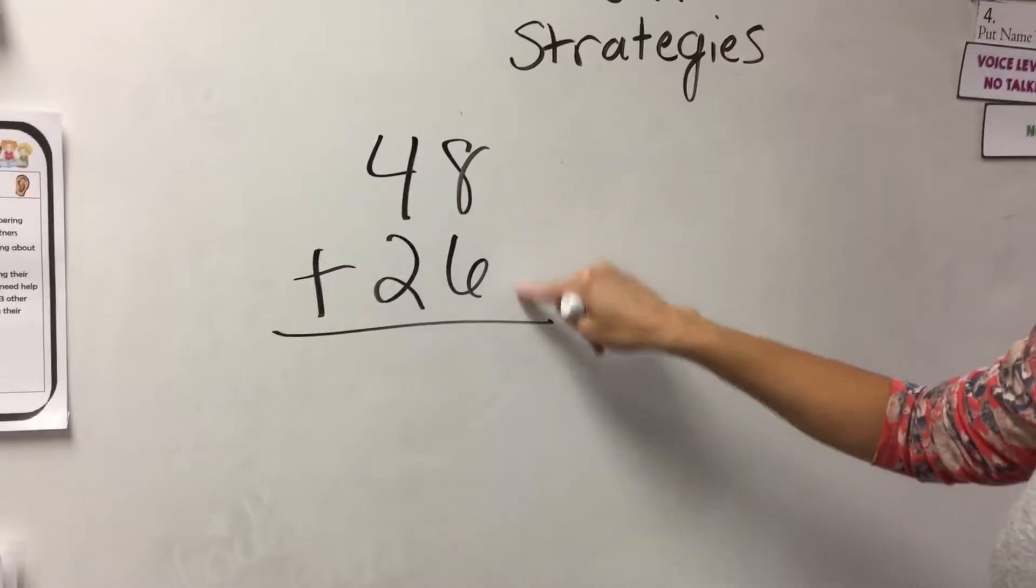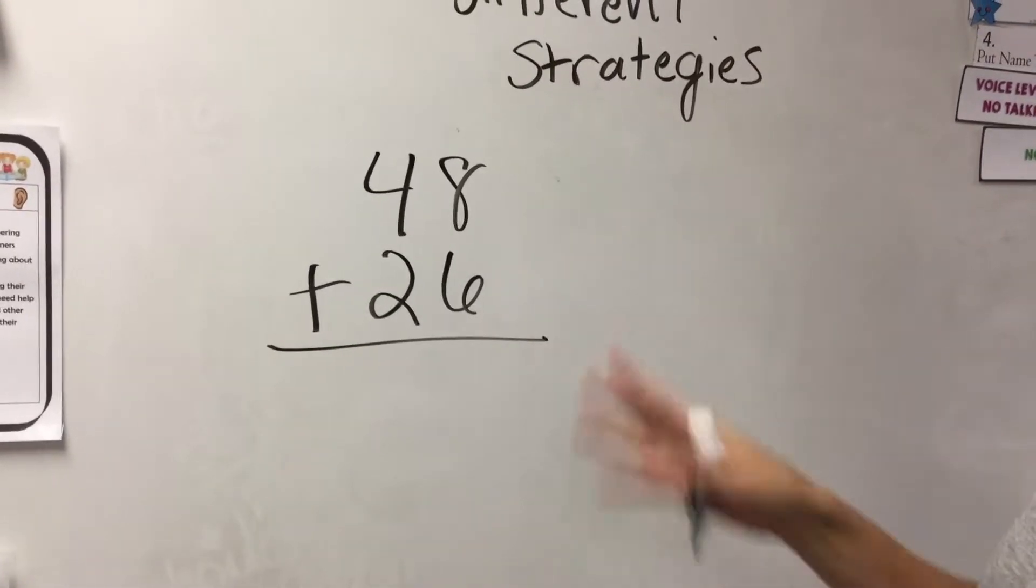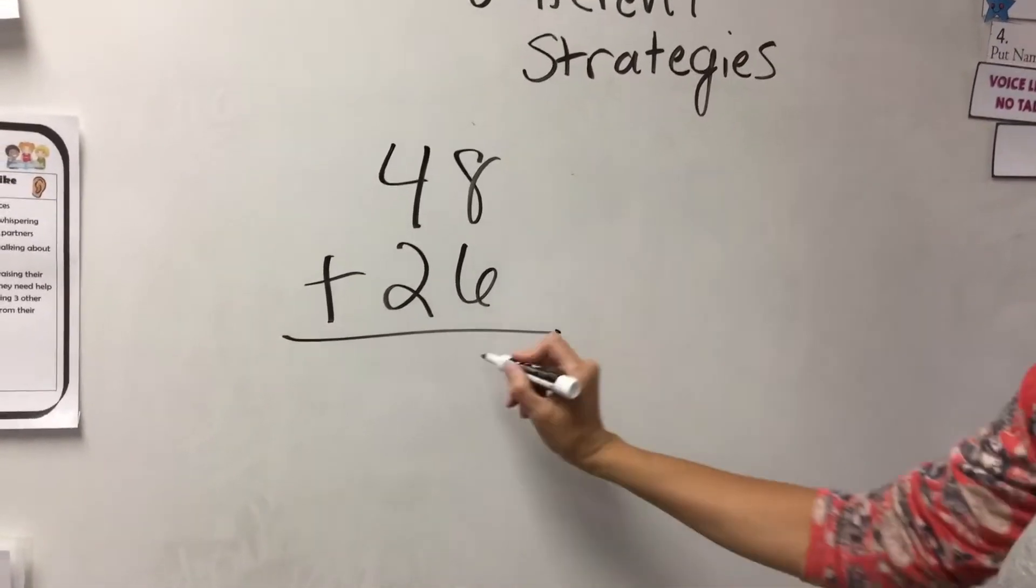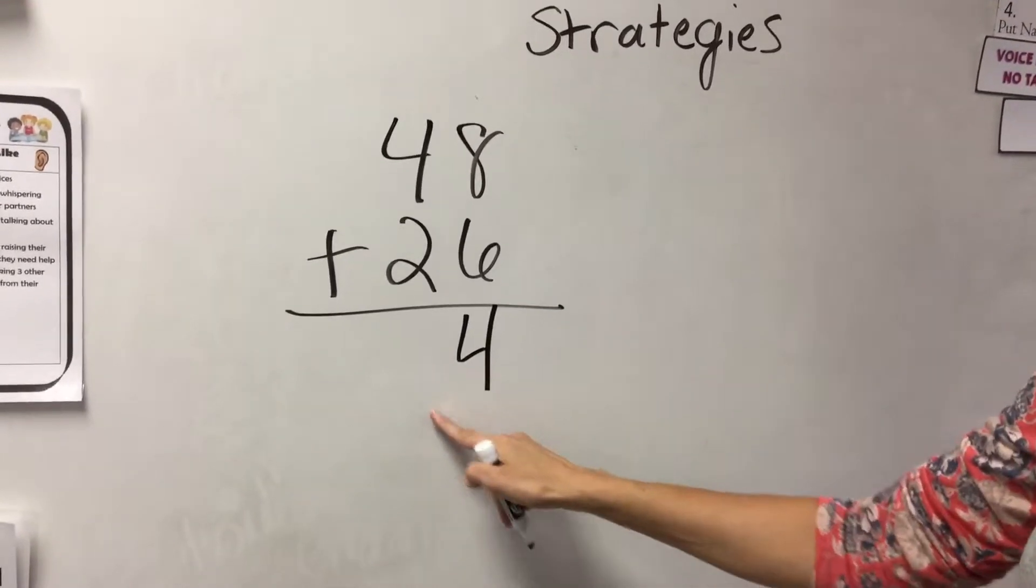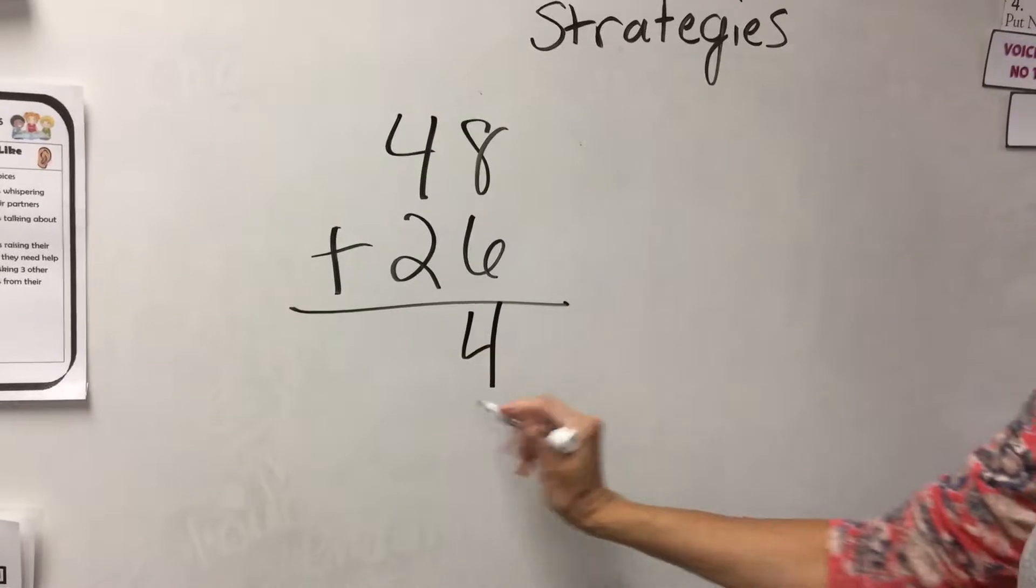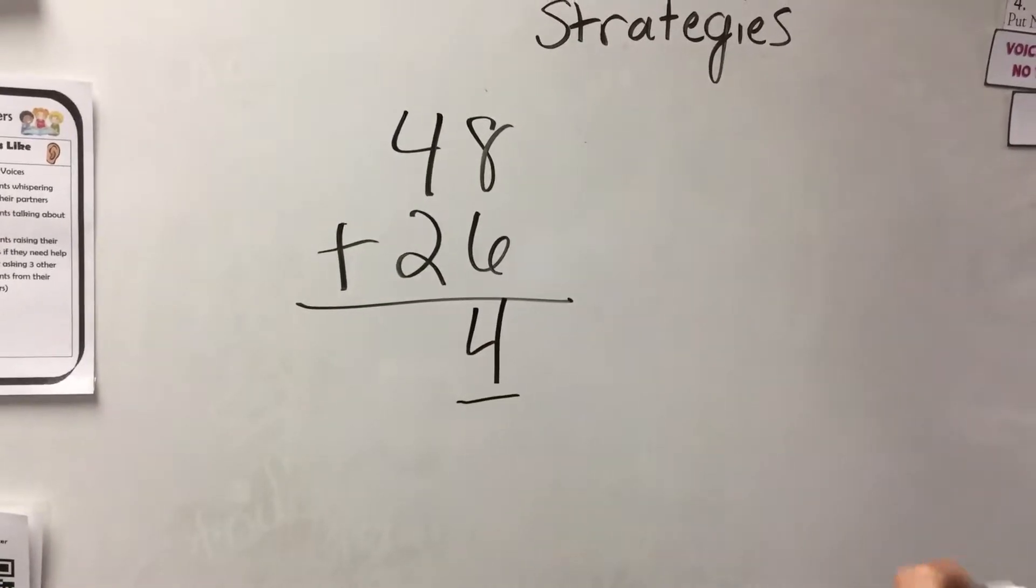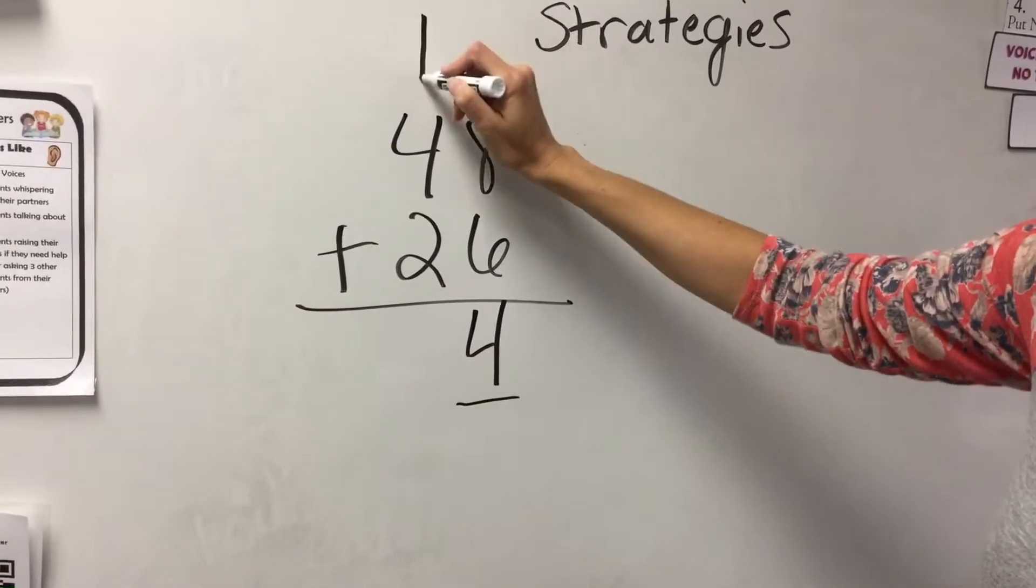And so in my head, what I would think, what is eight plus six? And I might use a different strategy to get that answer, and I happen to know that it's 14. But I can't just write my 14 here next to the ones place, because there can only be one digit sitting in that ones place. So I'm going to carry it over here to my tens place.